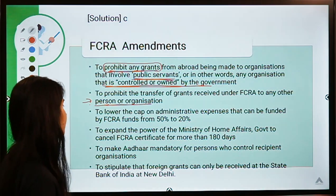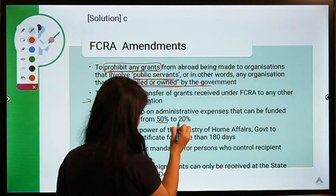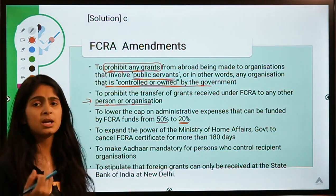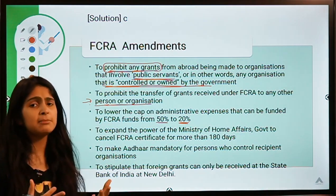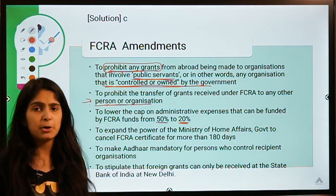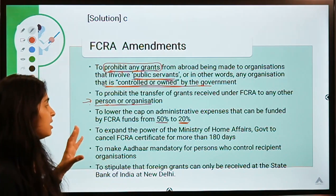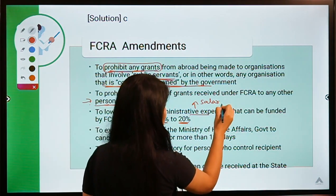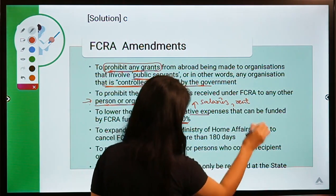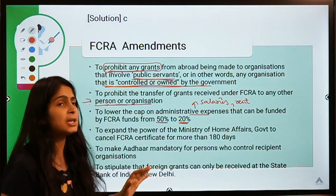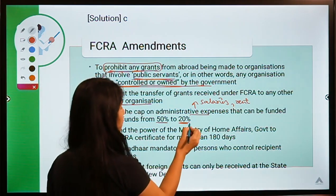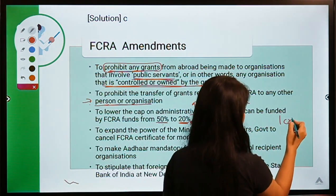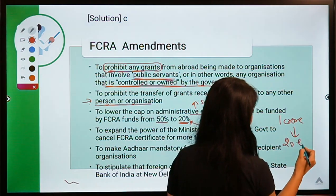The third proposal is to lower the cap on administrative expenses that can be funded by FCRA funds from 50% to 20%. For example, if an NGO receives a funding of 1 crore, they can only use 20% — that is 20 lakh — for administrative expenses like paying staff salaries or office rent. This used to be 50% earlier.